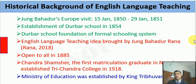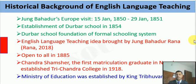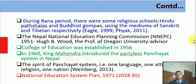Darbari School was not open to all the public until 1885. Then Chandra Samsher, the first matriculation graduate in Nepal, established Tri-Chandra College in 1918. After that, the Ministry of Education was established by King Tribhuvan in 1951. During the Rana period, there were religious schools — Hindu parsalas and Buddhist gombas — using Sanskrit and Tibetan as mediums of instruction respectively.